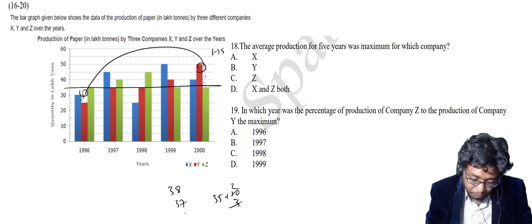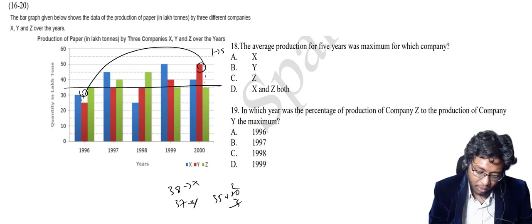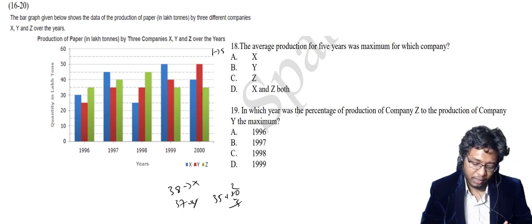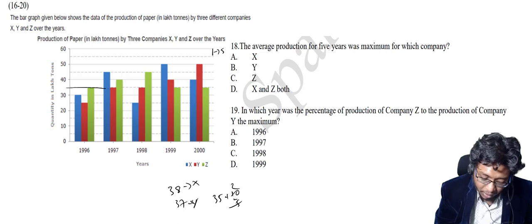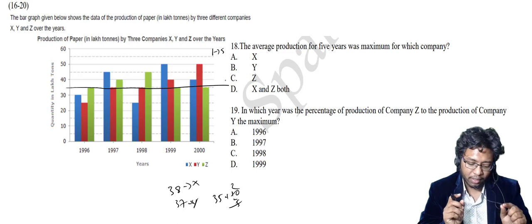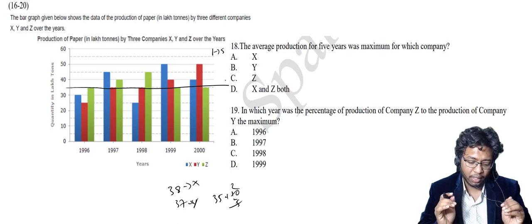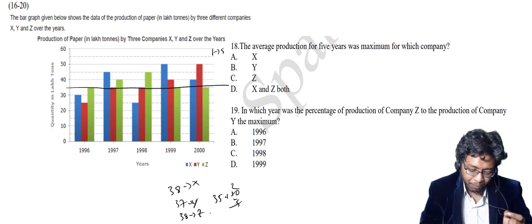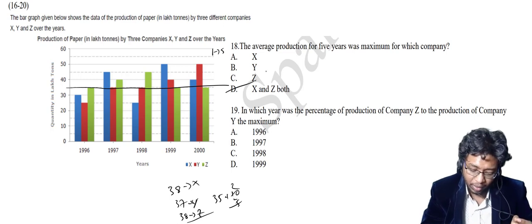Now calculate the average for Z, the green color. I assume average is 35 again. There is an excess of 1 here, no excess here, and an excess of 2 there — total excess of 3 gaps = 15. 15 by 5 = 3, so 35 plus 3 = 38. Z also gives an average of 38. So the answer is X and Z, both having the maximum average of 38. In DI, don't waste time — try to be as smart as possible.